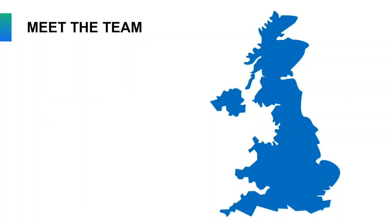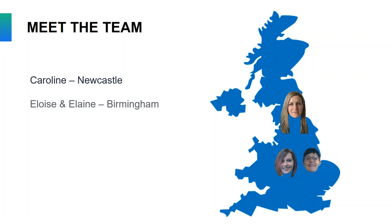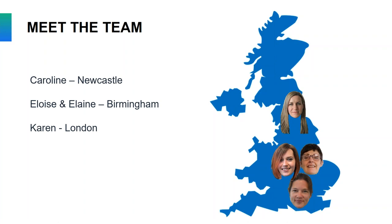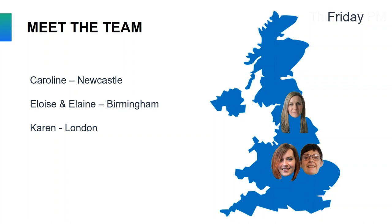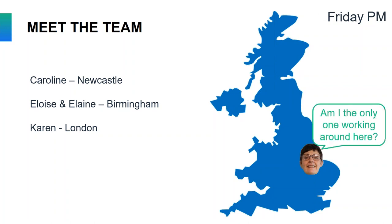Our team is pretty similar to that. We are a team of four writers: myself in Newcastle, Eloise and Elaine in Birmingham, and Karen who's based in London. As well as being in different offices, we all work different hours — we're all in on Monday, all in on Tuesday morning but Eloise goes home in the afternoon, we're all back in on Wednesday and Thursday morning, but Thursday afternoon I go home.